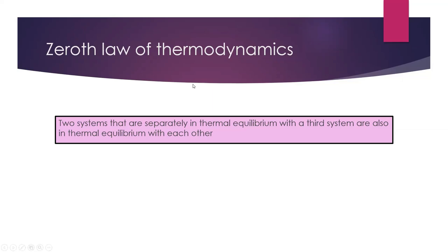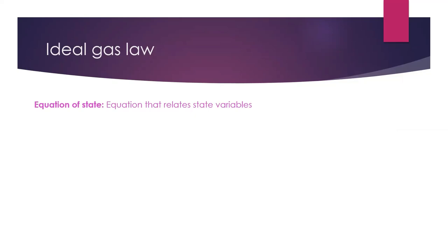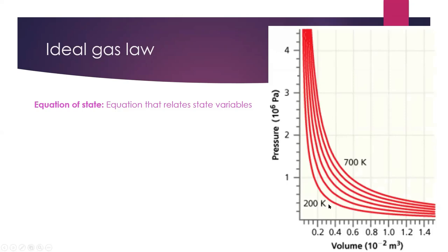An important part of this class is equations of state — equations that relate the state variables. For the ideal gas law, pressure, volume, temperature, and number of moles are all related. There are intensive variables, which are independent of the size of the system, and extensive variables, which are proportional to the size of the system. Pressure and temperature are intensive; volume is extensive. A can of soda is at 40 degrees Fahrenheit and about 3–4 atmospheres regardless of whether it's a can or a two-liter bottle, but the volume changes with the size.